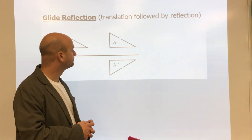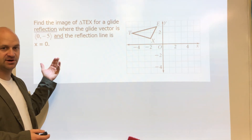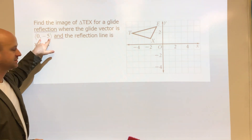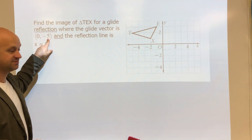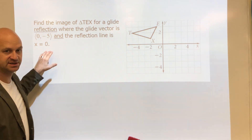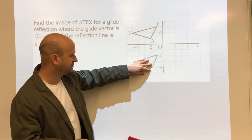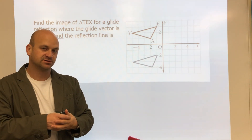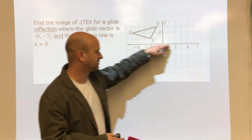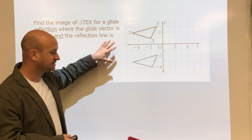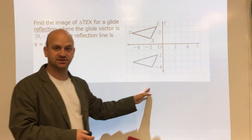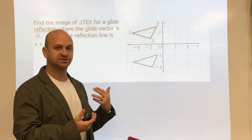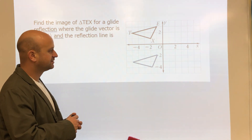Here's an example of a composition problem. We have triangle TEX, and we're going to use a vector that means we go down five units, then reflect over the line x equals zero. We go down five units, graph the points, then reflect over x equals zero. Recall: x equals zero is a vertical line — the y-axis — and y equals zero is the x-axis.